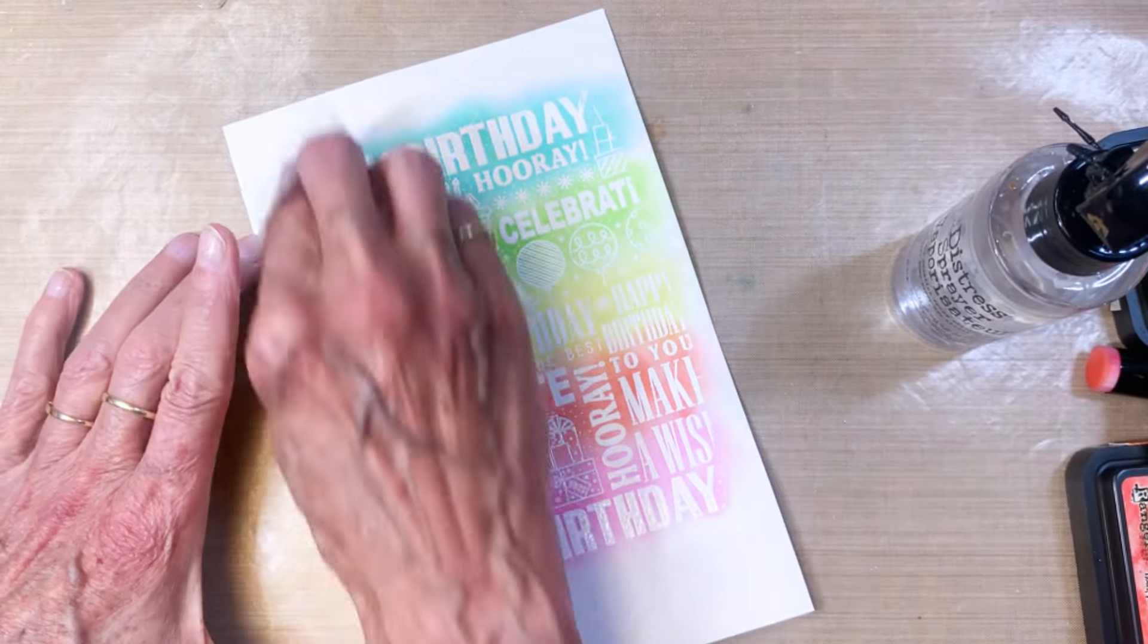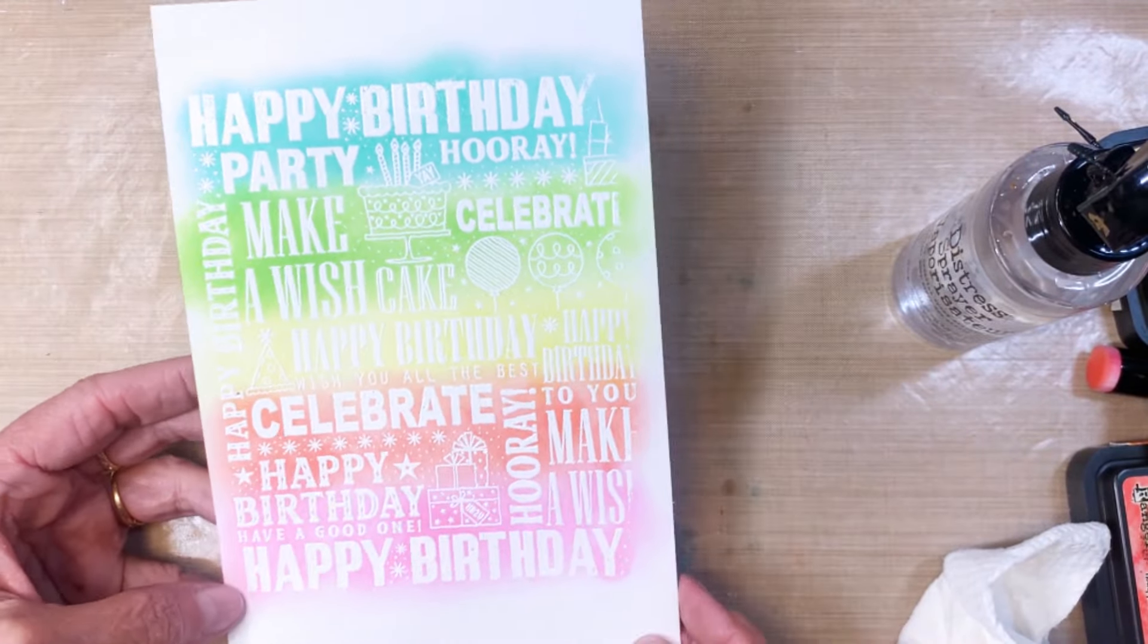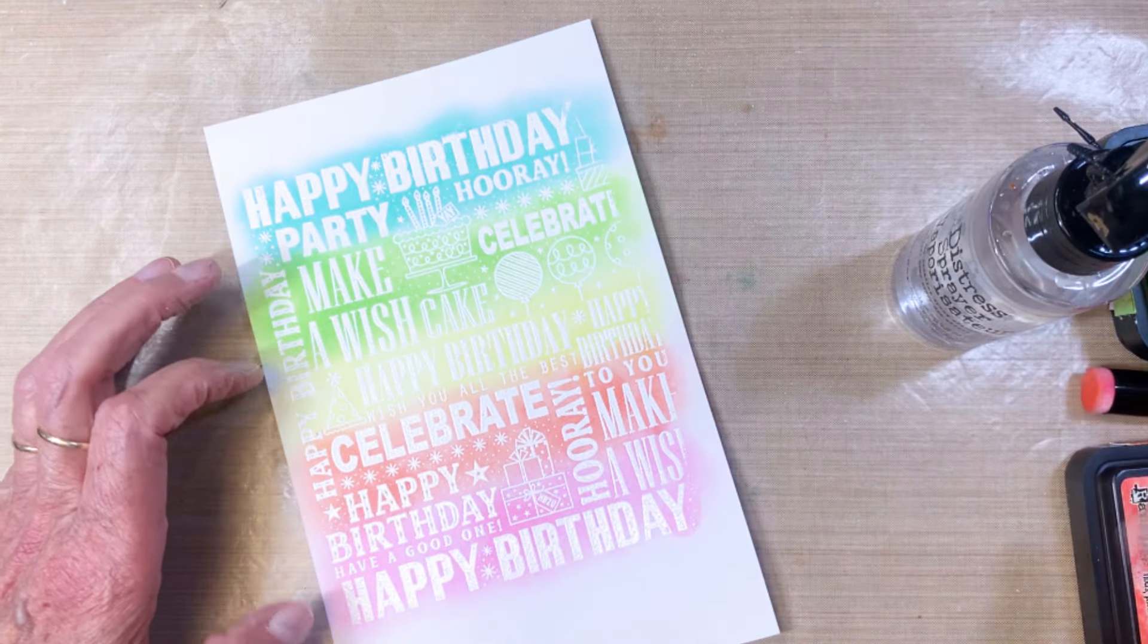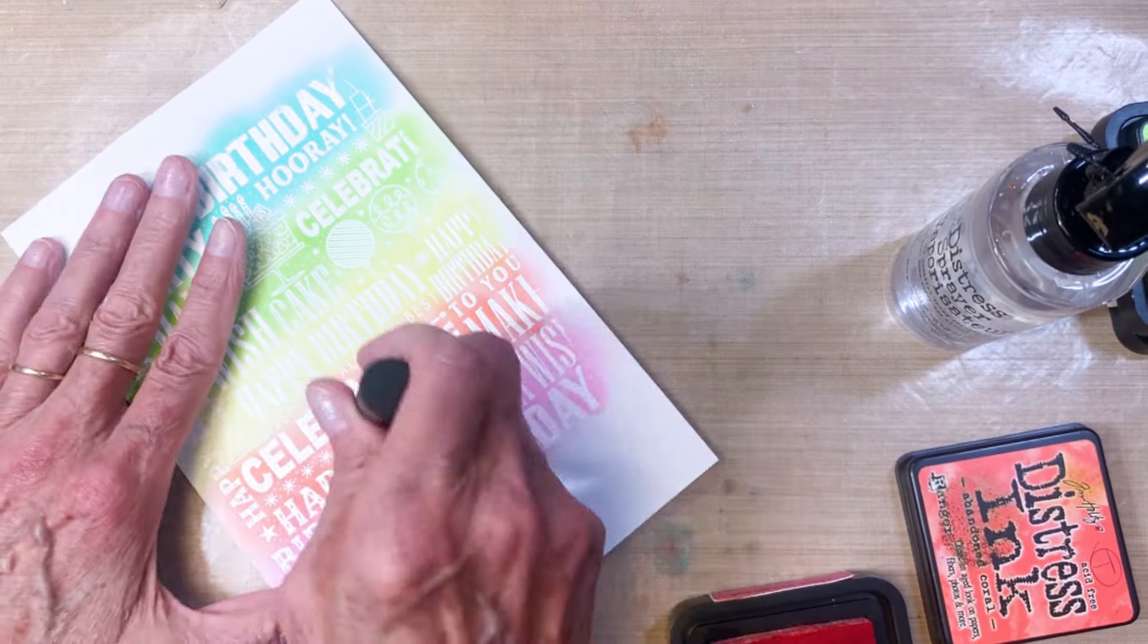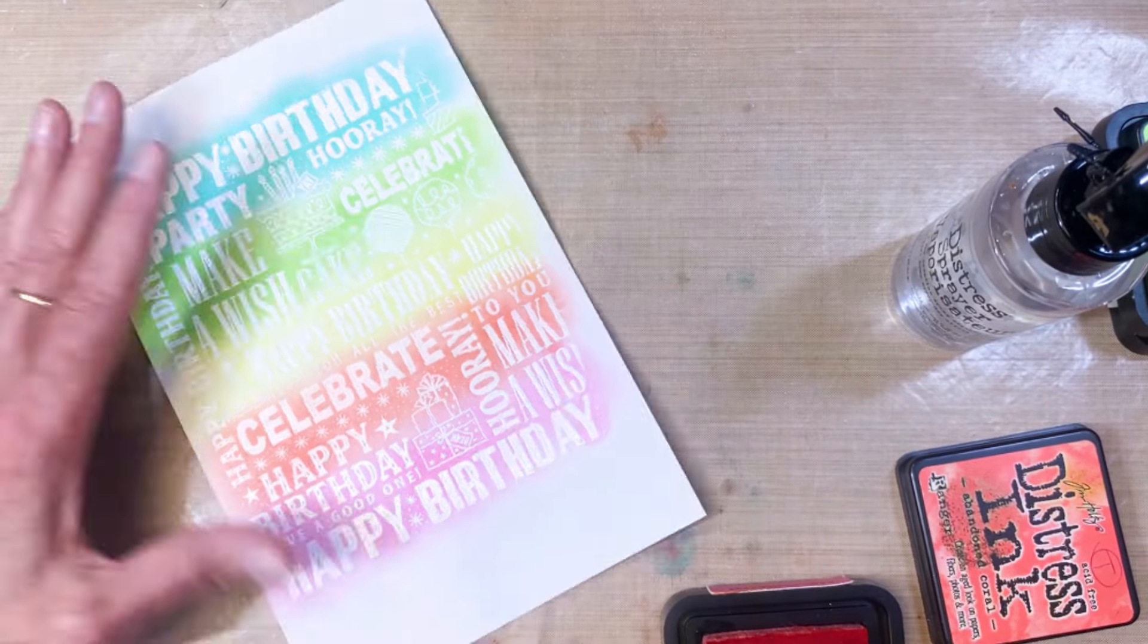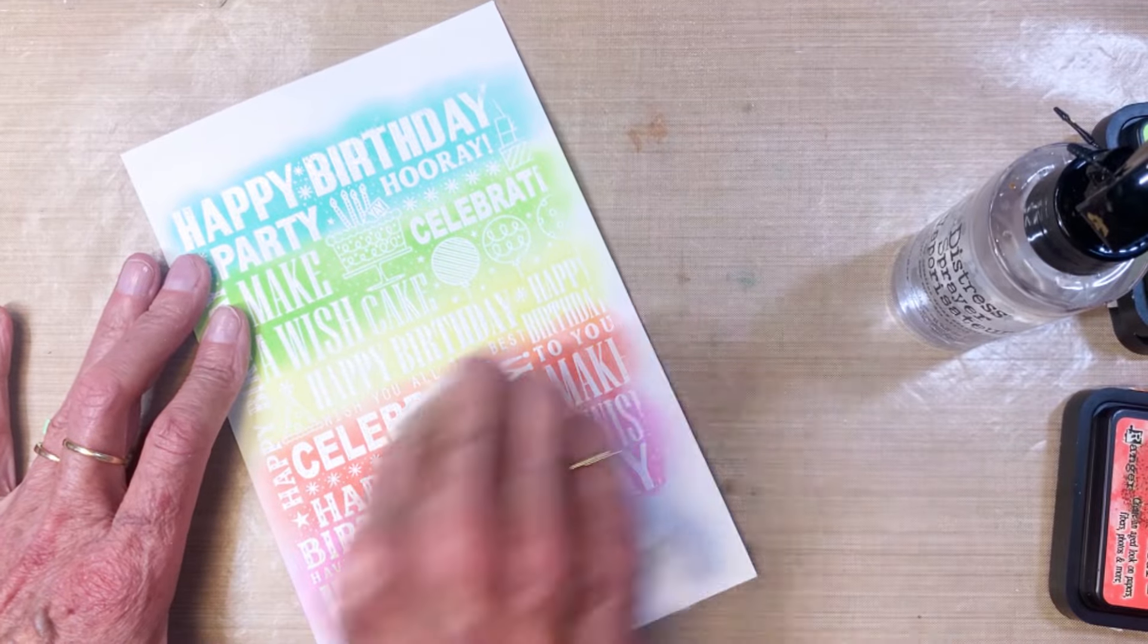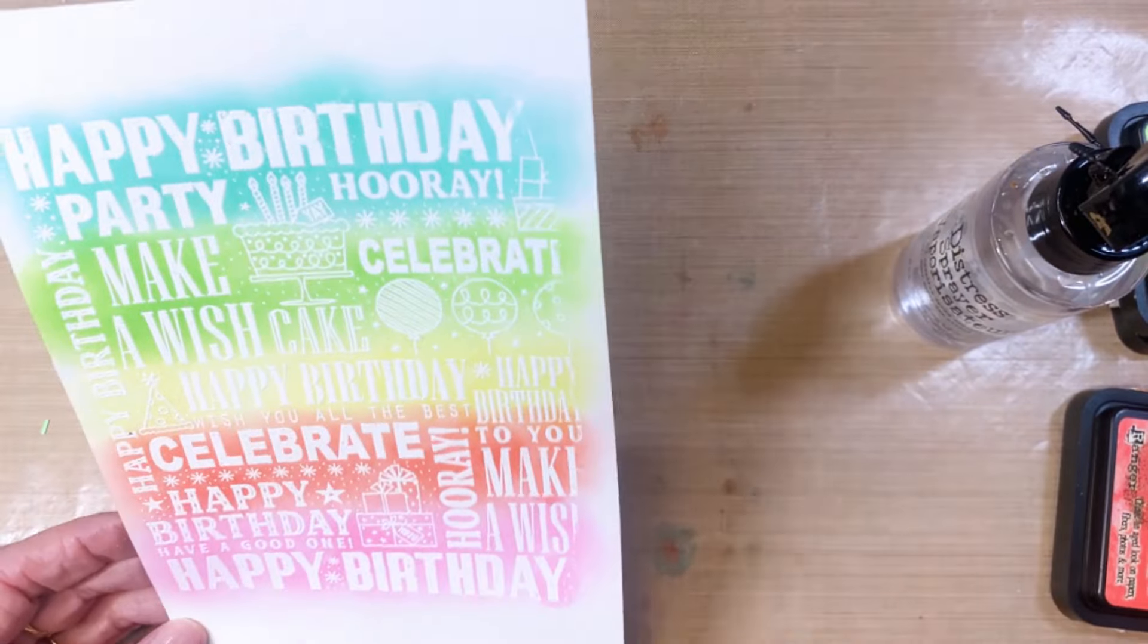Once I got that done, I decided that abandoned coral line maybe needed a little bit more brightness to it. So I pulled out the ink again and added some more color and then went ahead and wiped it off.